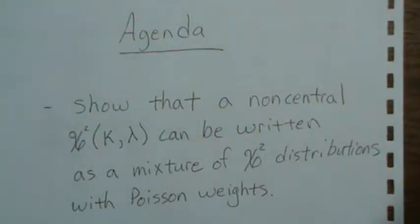The agenda for today's talk is to show a non-central chi-square distribution can be written as a mixture of chi-square distributions with Poisson weights.